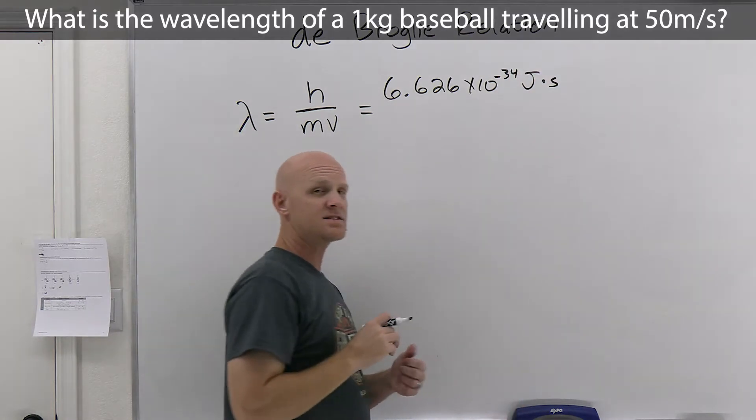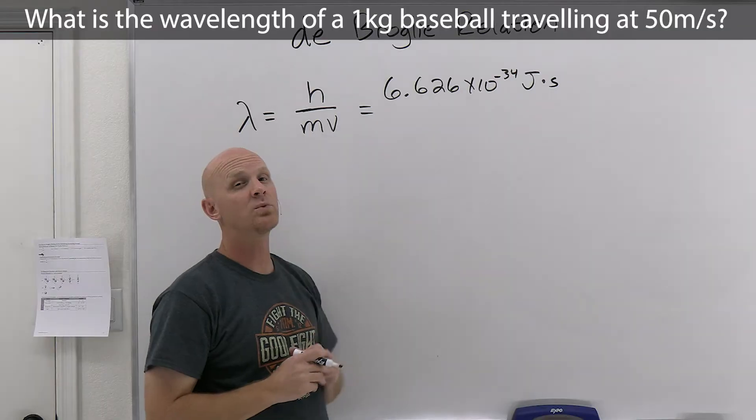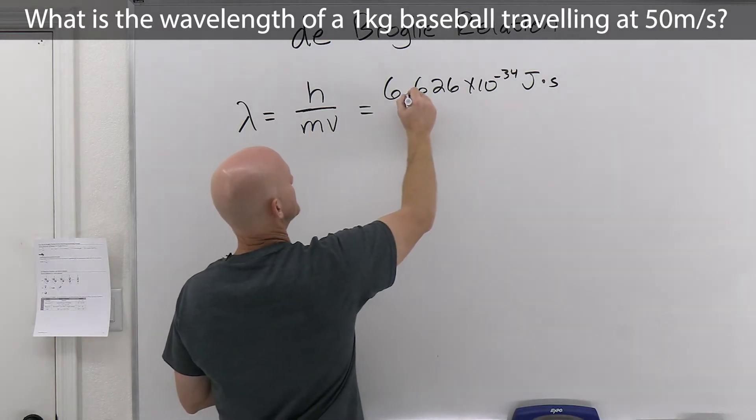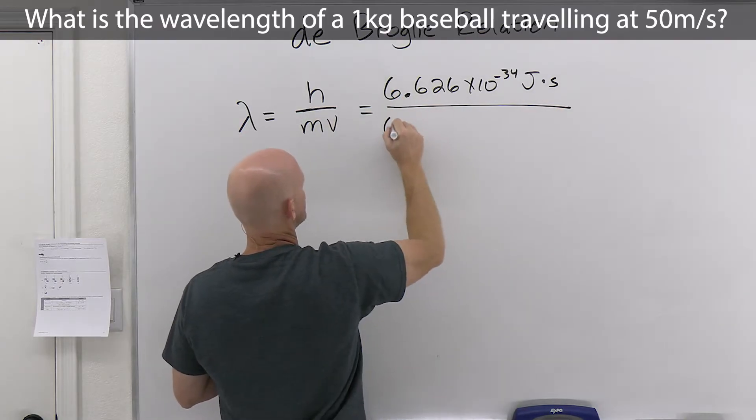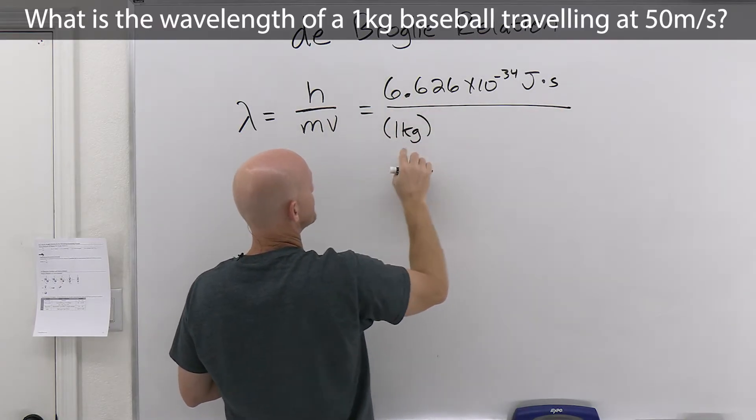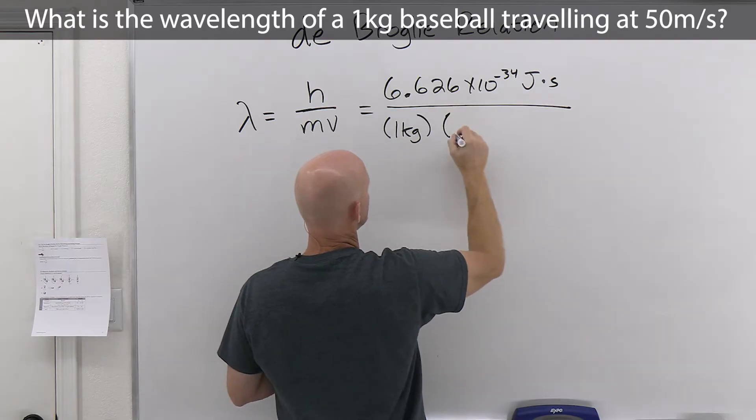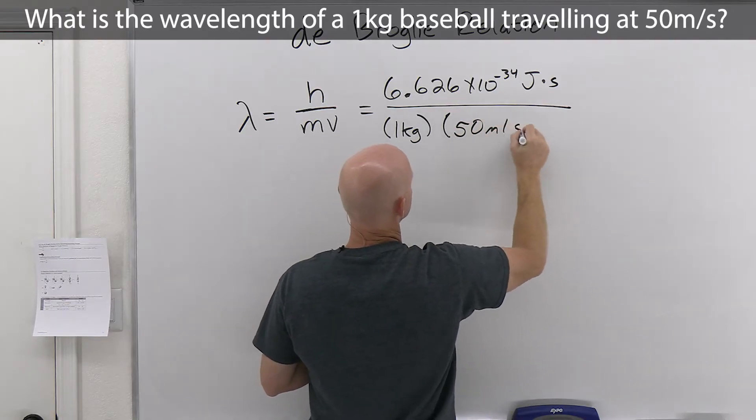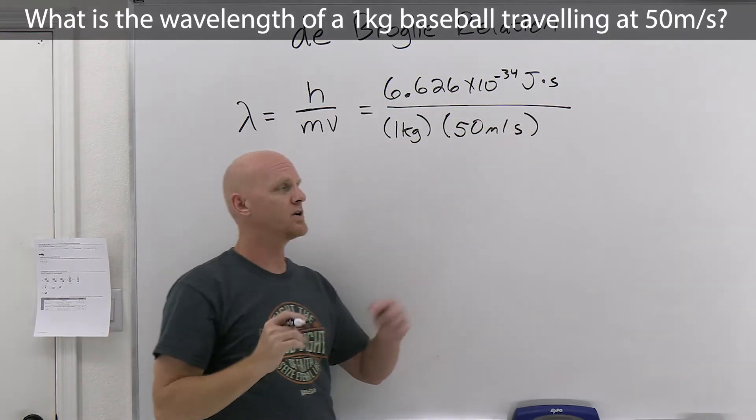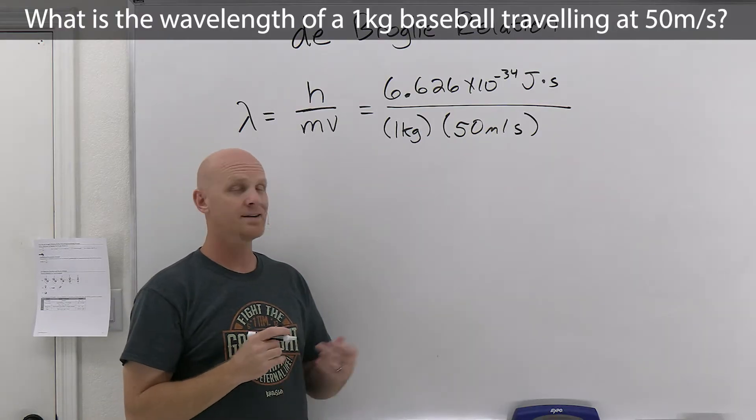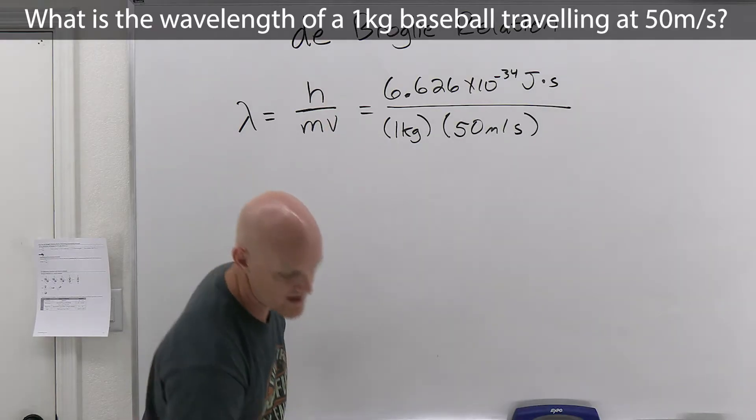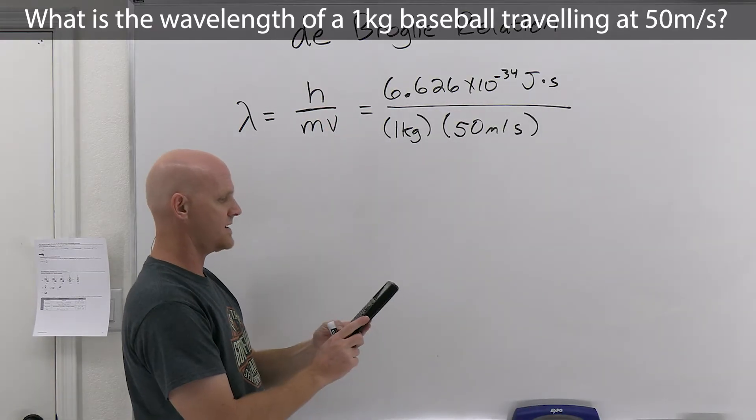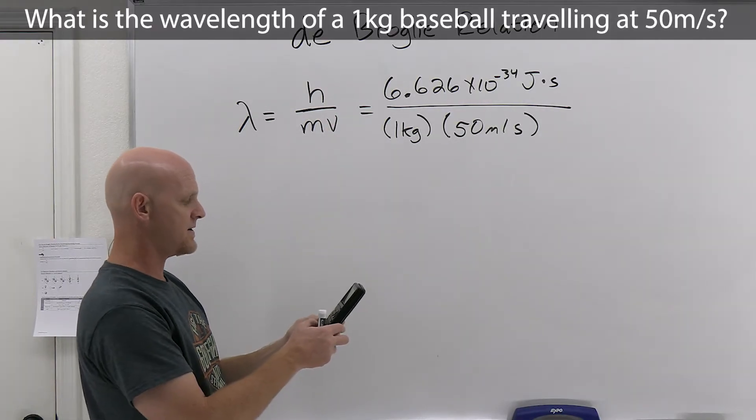And for those that didn't see the last couple of lessons, this is not typically a constant we make students memorize. It's usually one that they're provided with. So but if your professor makes you, my apologies. So then we've got a one kilogram baseball here. That's the SI unit for mass, it turns out. And velocity here we said was 50 meters per second, which is, I don't know, probably on the order of somewhere, you know, like 90 miles an hour or something like that. So like a good fastball or something like this. And so we're going to calculate out this wavelength now and see why it is we don't actually experience it.